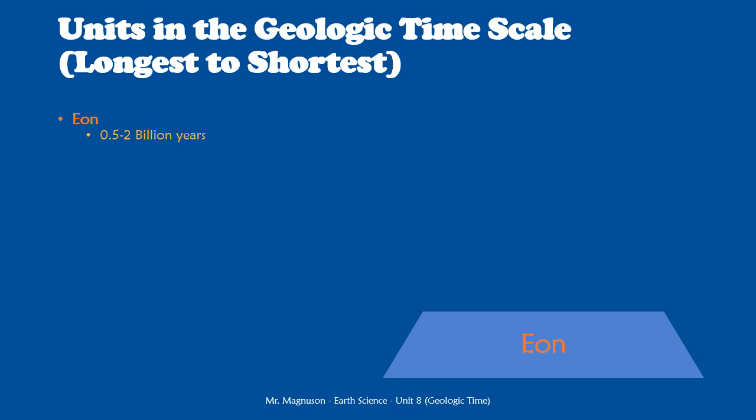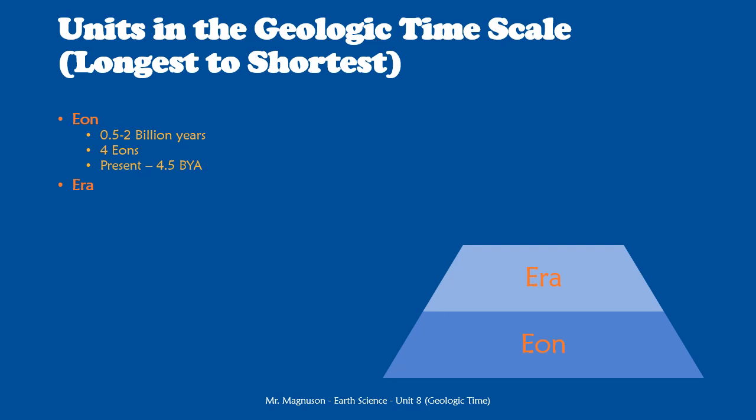First off, the eon — our biggest chunk of time. Eons are many hundreds of millions to billions of years long. The time range is roughly half a billion to two billion years for a single eon. There are four eons throughout the history of the earth, so the entire history from 4.6 billion years ago until right now is divided into just four eons, spanning from 4.5 billion years ago to the present.